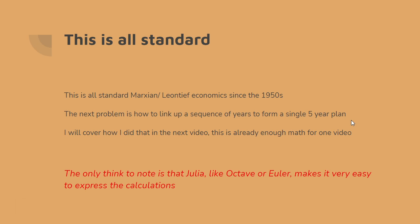This is all standard stuff. It's been standard Marxian Leontief economics since the 1950s. However, it's a level of Marxian economics that tends to be only professional economists study. Most militants who study Marxist economics read Capital and they don't read the more modern stuff. But it's all well-known stuff that has been known since the 1950s. The next problem I'm going to go into in the follow-up video is how I link up this piece of Leontief algebra over a sequence of years to build a single five-year plan. I think I've already had enough in this one video.